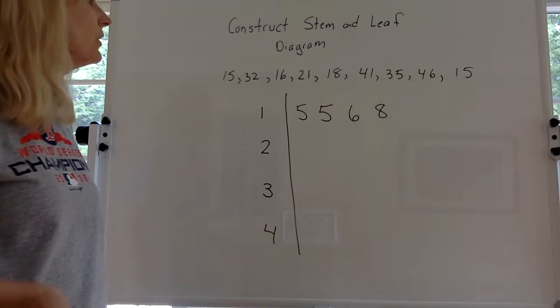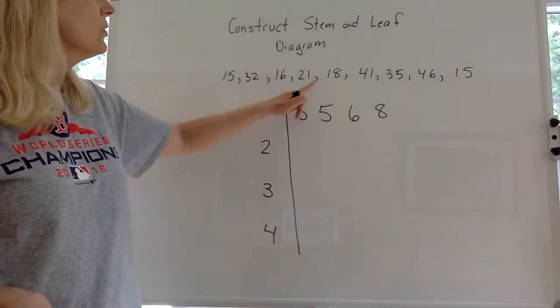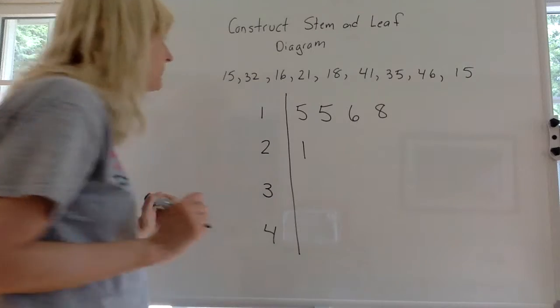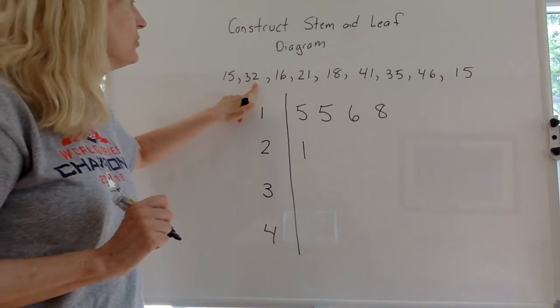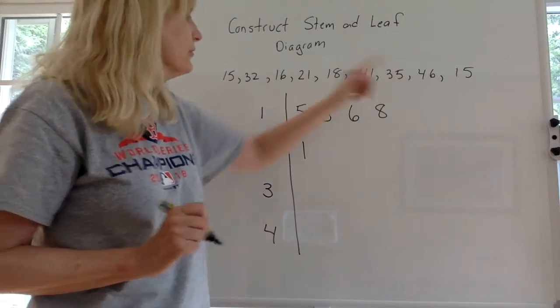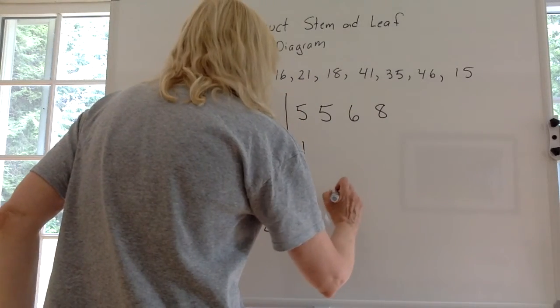Now let's do the 20s. I think we only have one twenty and it's a 21. Now we got to do the 30s. We have a 32 and we have a 35, so you want to put a 2 and a 5.